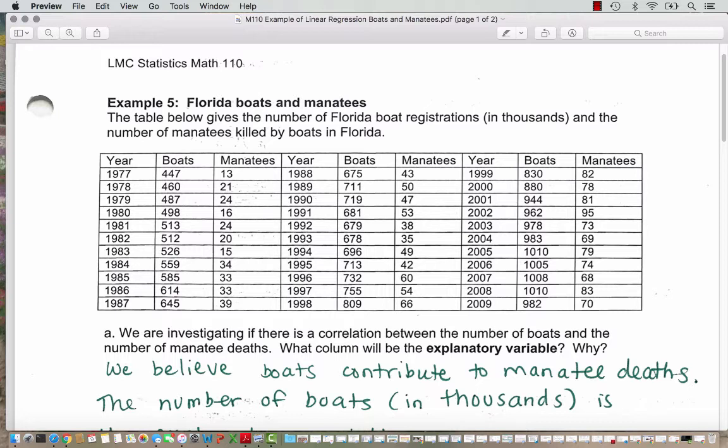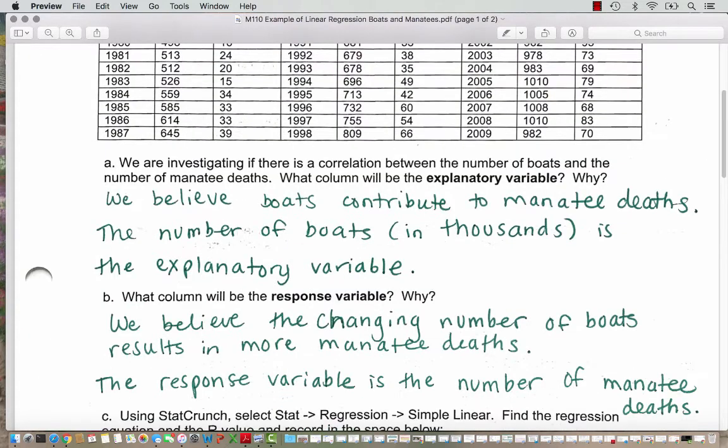We are investigating if there's a correlation between the number of boats and the number of manatee deaths. Which column will be the explanatory variable and why? We believe that these boats are contributing to the manatee deaths. Dead manatees probably aren't contributing to people registering more boats, so the relationship seems to be that the boats are contributing to the manatee deaths because the manatees are getting hit by the boats. So the number of boats in thousands is the explanatory variable.